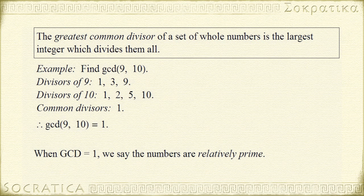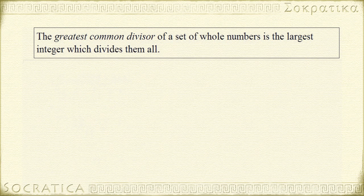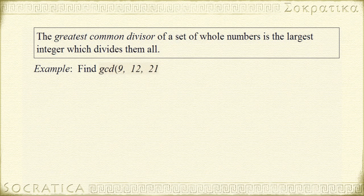Just as you can find the greatest common divisor of 2 whole numbers, you can find the greatest common divisor of 3, 4, or any number of integers. So next, let's find the greatest common divisor of 9, 12, and 21. So like before, we're going to go through and find the divisors of each of these.